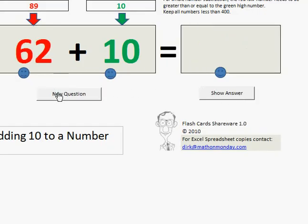We have a new question, we have a 10's digit of 6, we add 1 to it, we end up with 72.